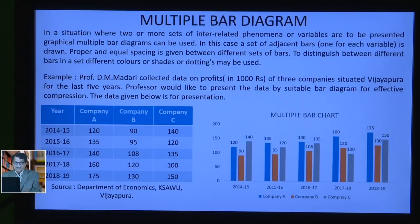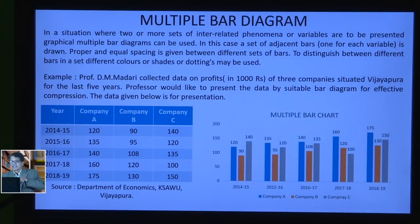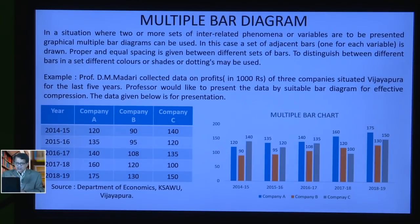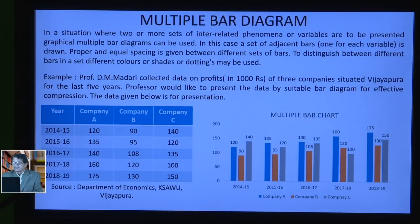In a situation where two or more sets of interrelated phenomena or variables are to be presented graphically, multiple bar diagrams can be used. A set of adjacent bars — one for each variable — is drawn. Proper and equal spacing is given between different sets of bars. To distinguish between different bars in the set, different colors or patterns can be used for effective presentation.